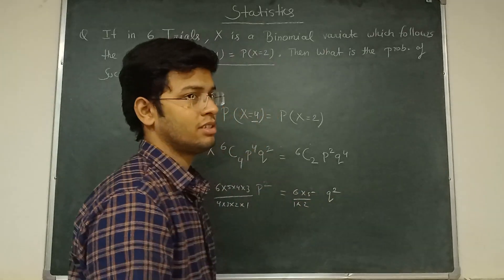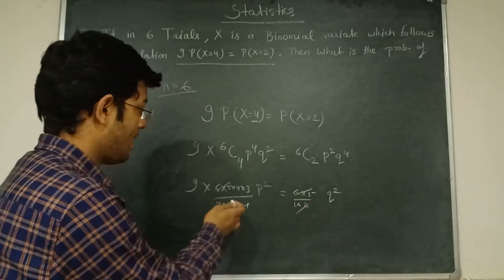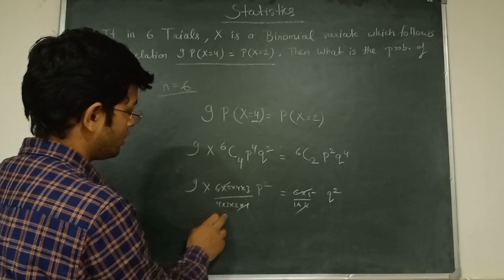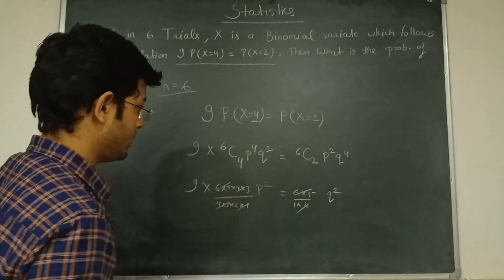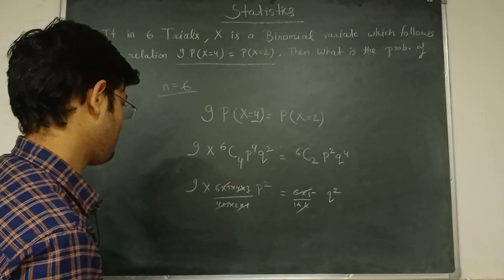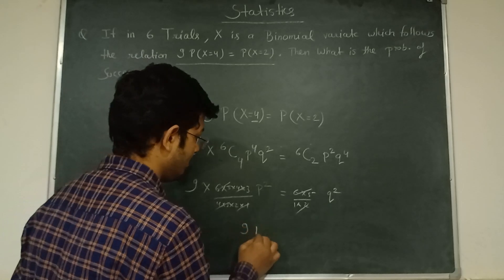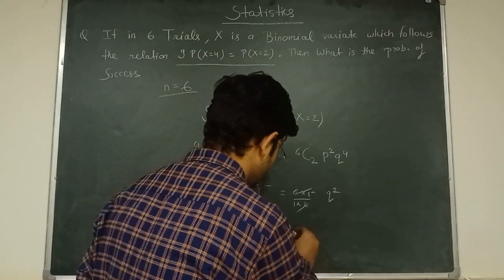The remaining part is 4×3, and we can cancel out 4×3 from both sides. Only remaining here is 9p² = q².